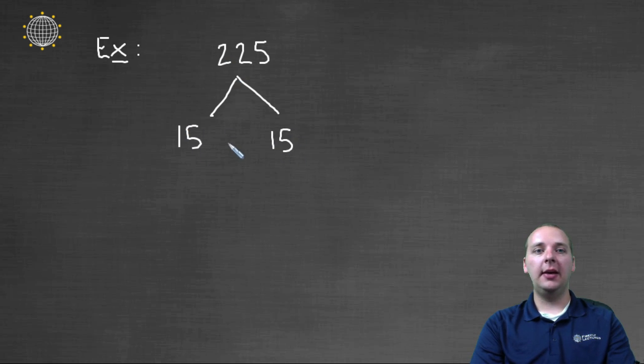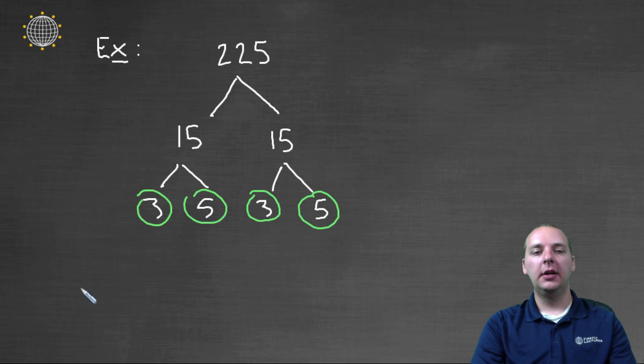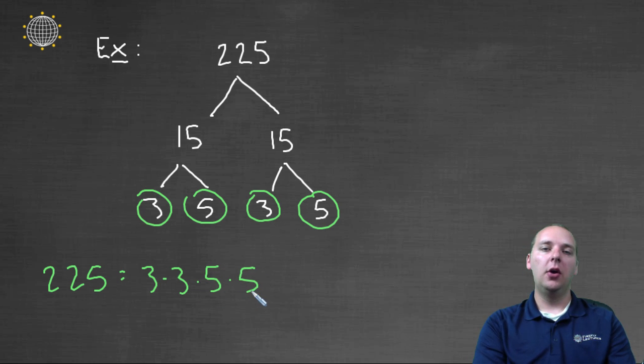You could also say five times blank gives you, what is it, five times forty-five. Five times forty-five would give you two-twenty-five. Regardless of how you start your tree, continue to break these down into smaller branches. Three times five, and three times five. Eventually you'll get down to prime numbers. And then I think I have three times five times three times five. So two-twenty-five's prime factorization would be three times three times five times five. So, hopefully that factor tree will help you factor large numbers down into its prime factorization.